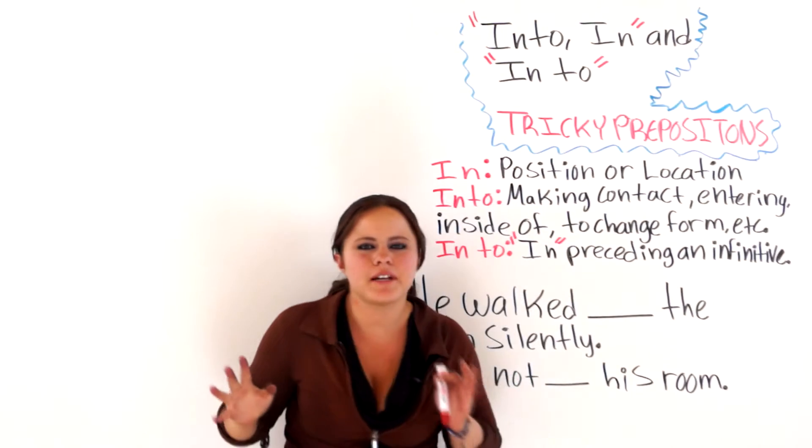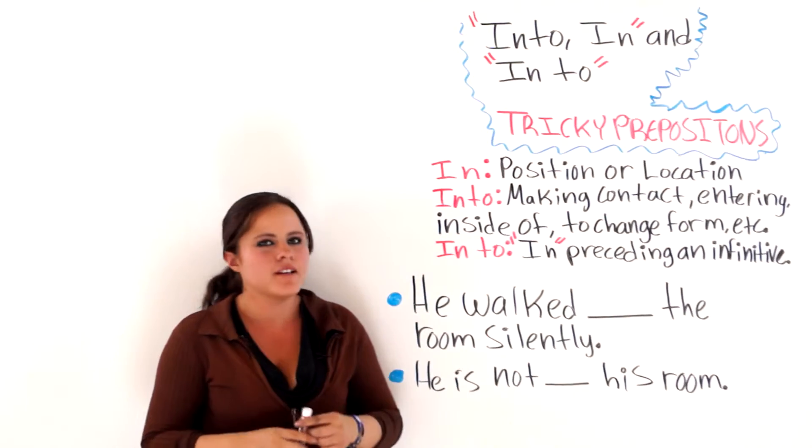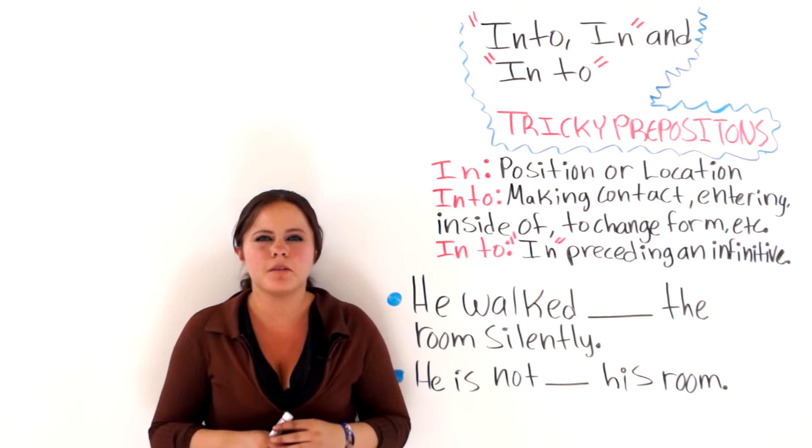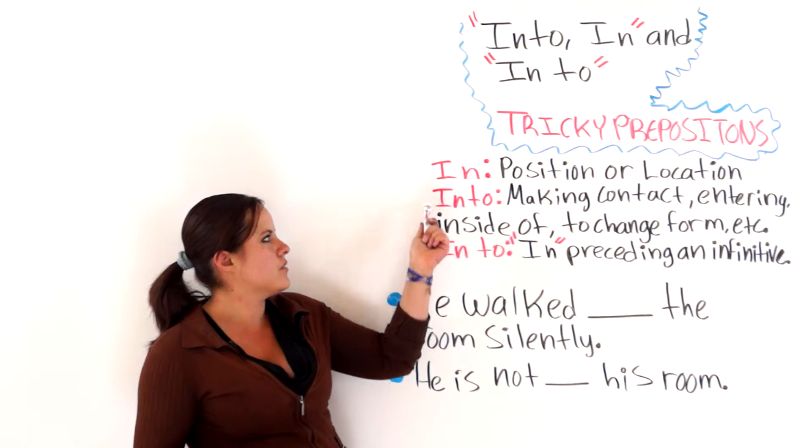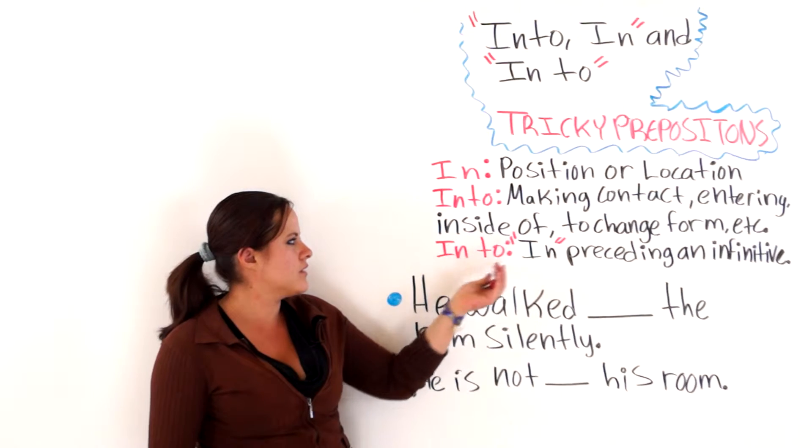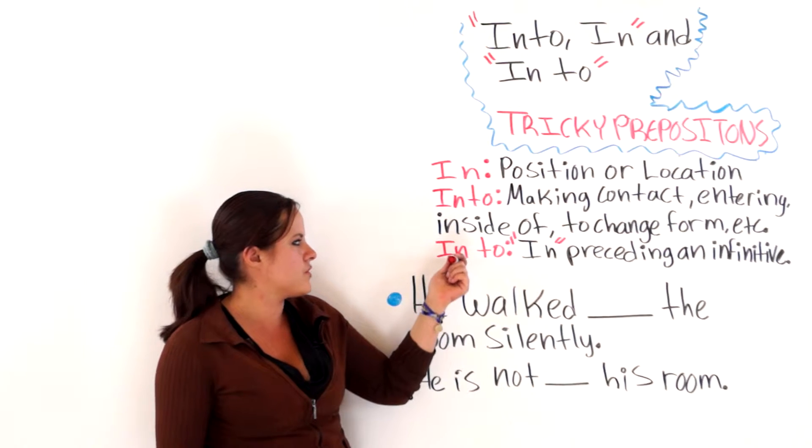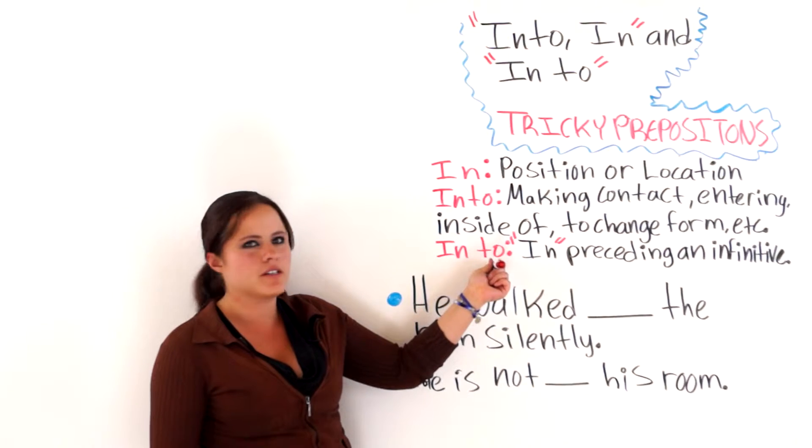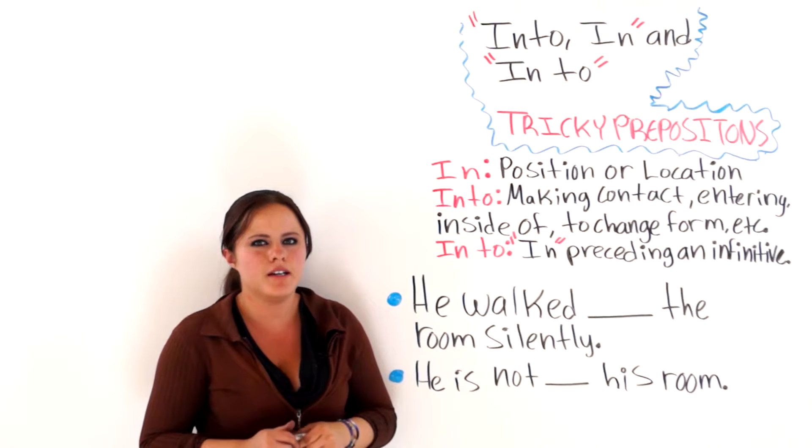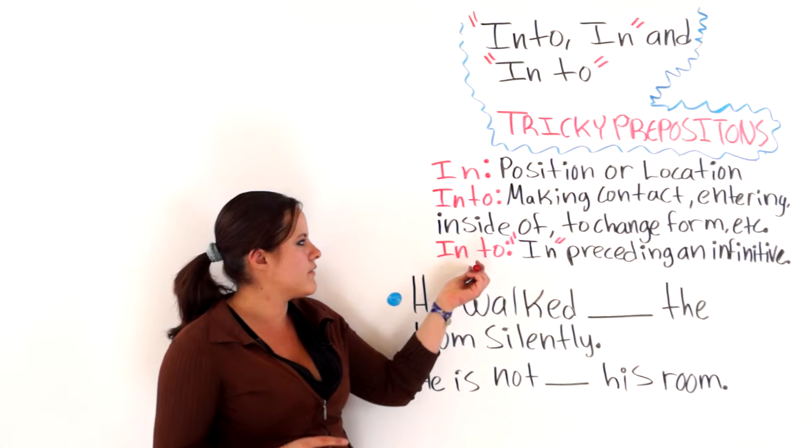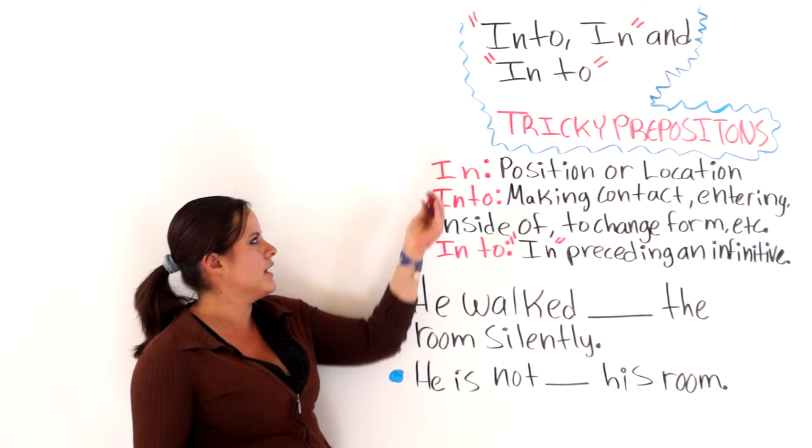Now, we have a very simple practice exercise. Well, actually two practice sentences. You are simply going to help me decide which of these prepositions to use. We already know that IN to means that we are using the preposition IN preceding an infinitive. For example, she came IN to hug her mom. Okay? So, we are going to leave this one out for now. And we are going to talk about IN and INTO.